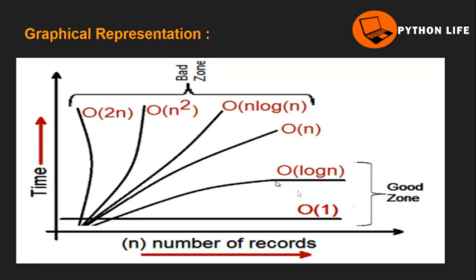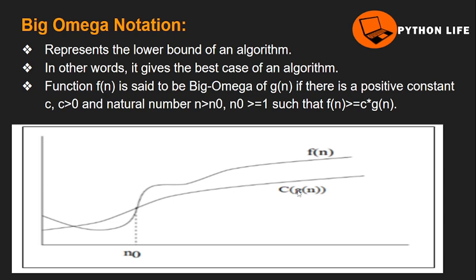Next, Big Omega notation. Big Omega notation represents the lower bound of an algorithm. In other words, it gives the best case of an algorithm. In the algorithm, we use the minimum time of the algorithm. We will represent this on a graph using the functional value.